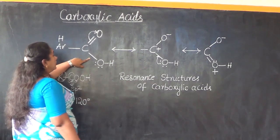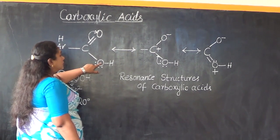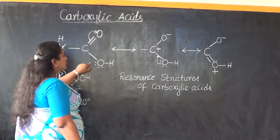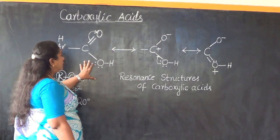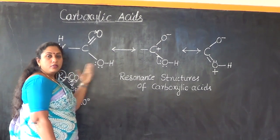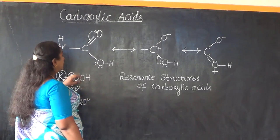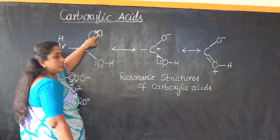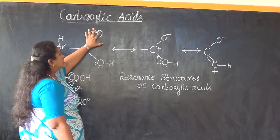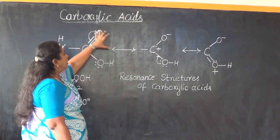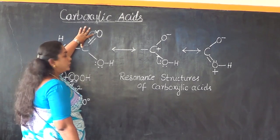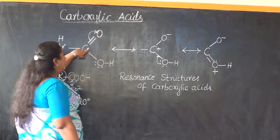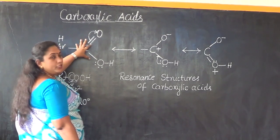The oxygen attached to carbon by a single covalent bond has two lone pairs of electrons. These electrons are responsible for the resonating structure of the carboxylic acid. The electron cloud shifts towards the carbonyl oxygen, causing that oxygen end to take a negative charge, and an electron deficiency arises at the carbon atom.